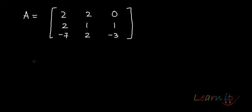Let's do another example of finding characteristic roots. My matrix this time is a 3 by 3 matrix: 2, 2, 0, 2, 1, 1, minus 7, 2, minus 3. In order to find the characteristic roots, we will use the characteristic equation, which is det(A minus lambda I) equals 0.